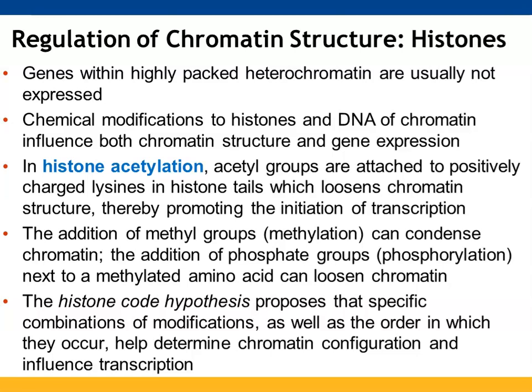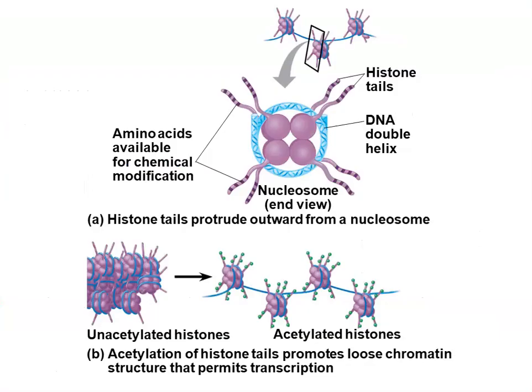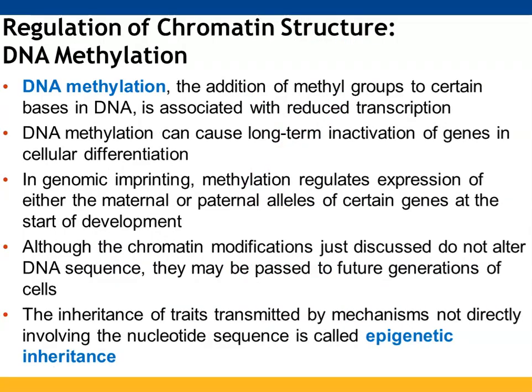Phosphorylation next to methylated amino acids can also help to loosen chromatin and make it more available for transcription. The histone code hypothesis proposes that the combination of modifications and the order in which they occur helps to determine the form chromatin is in and its ability to be transcribed. The histone tails protrude from the nucleosome — if they are acetylated, those chromatin pieces stick out, making them easier to transcribe. The unacetylated ones are wrapped more closely and not as available for transcription. Methylation, when methyl groups are added to certain bases, is associated with reduced transcription and can cause genes to be inactivated for extended periods.